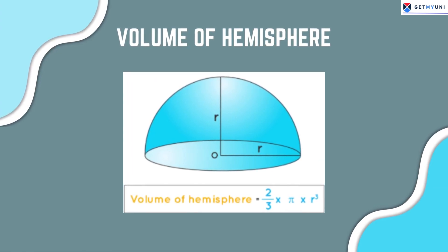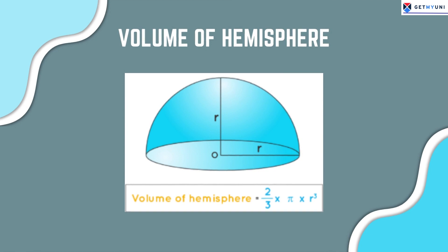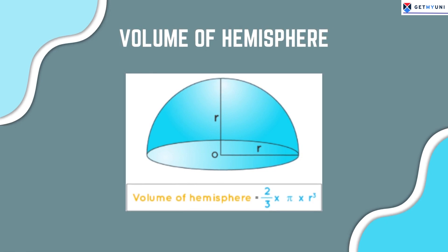The volume of hemisphere equals 2 by 3 pi r cube in cubic units, where pi is a constant of value equal to approximately 3.14 and r is the radius of the hemisphere.